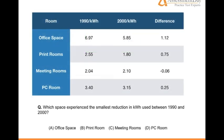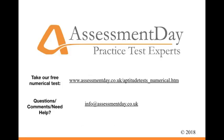Let's revisit the question: which space experienced the smallest reduction in kilowatt-hours used between 1990 and 2000? From our calculations compiled in this table, we can see that our answer is 0.25 — or D: PC room. Thank you for watching this video tutorial. We hope it's been helpful. Best of luck with your test practicing here at Assessment Day.